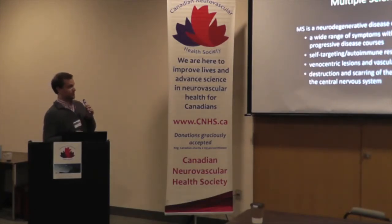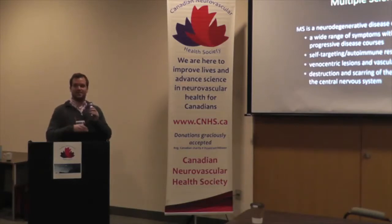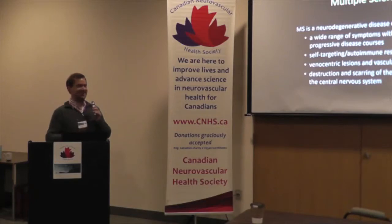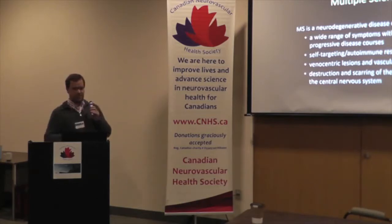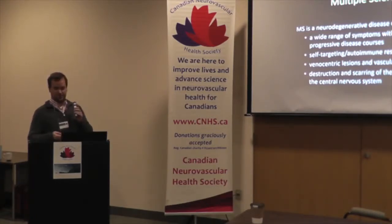Multiple sclerosis is a neurodegenerative disease that's very difficult to characterize due to a wide range of symptoms, making it challenging to link images to EDSS scores, patient reports, and quantitative measurements. There's a self-targeting immune response with blood-brain barrier disruption and infiltration of peripheral macrophages. There's a very clear vascular aspect — the venocentric lesion — as well as vascular dysfunction and states of hypoxia within lesions. We also see disruption and scarring of the myelin sheets of the central nervous system.